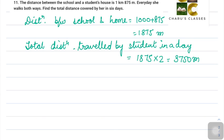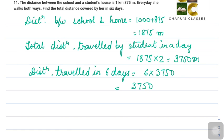Now this is in a day, and we have to find how much she travels in 6 days. So distance traveled by her in 6 days, that is 6 into 3750. This comes out as 22,500 meters. If you want to write it in kilometers, you can write it as 22.5 kilometers also.